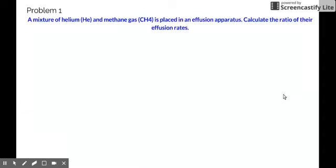So let's start with a mixture. Problem one, the mixture of helium and methane gas is placed in an effusion apparatus. When we say effusion apparatus, it's an apparatus in which you put a hole where gases can possibly escape. So you need to calculate the ratio of the effusion rates.